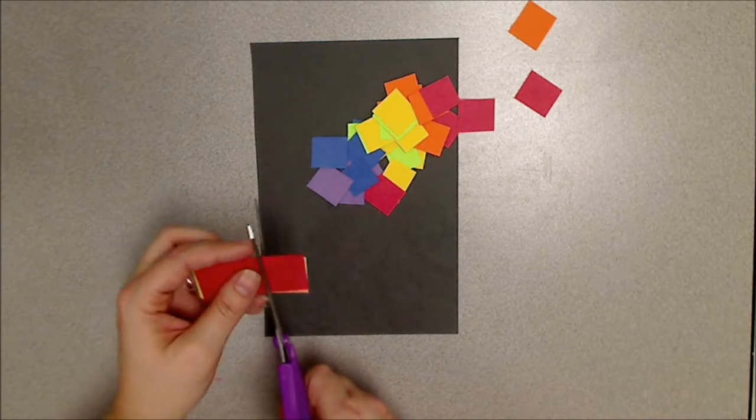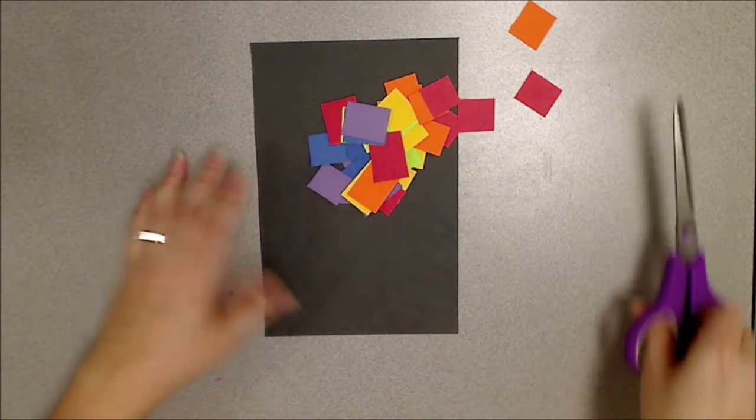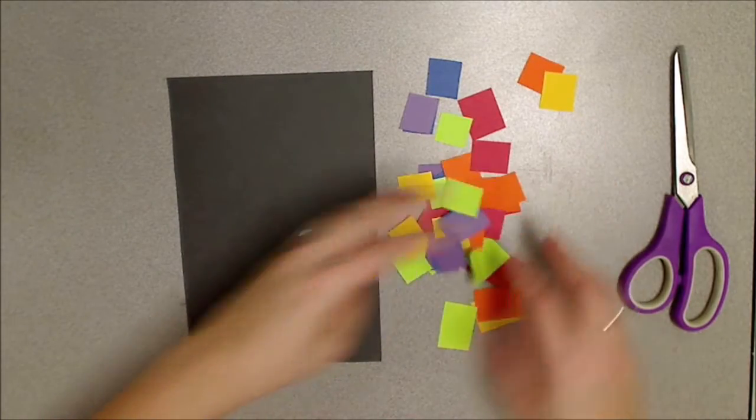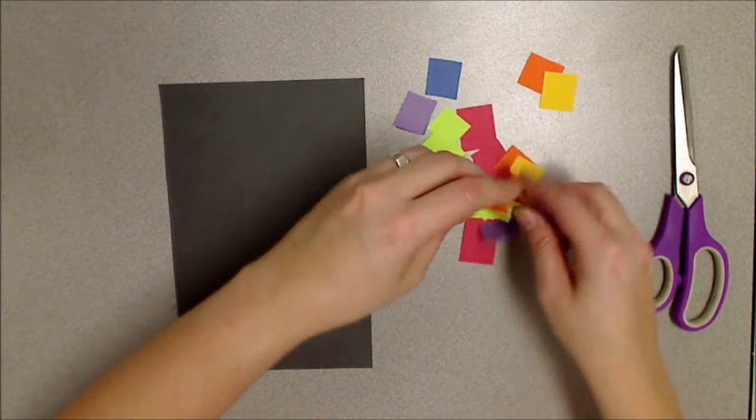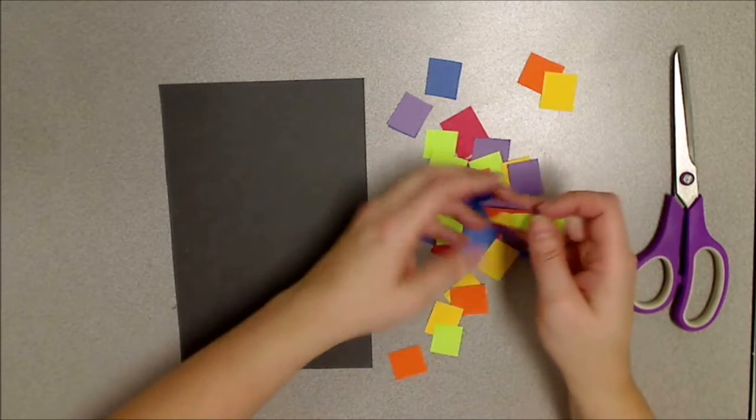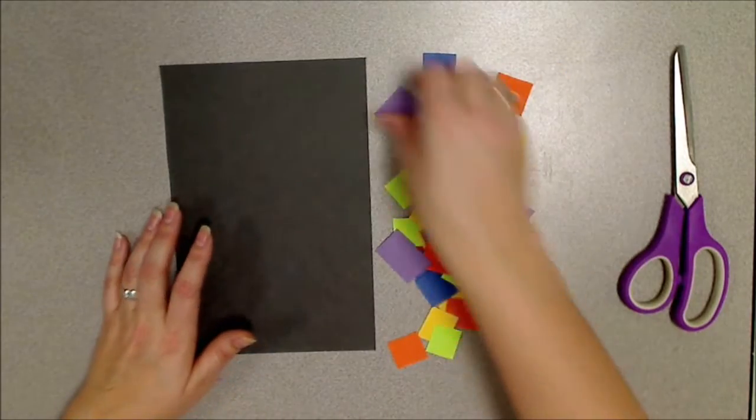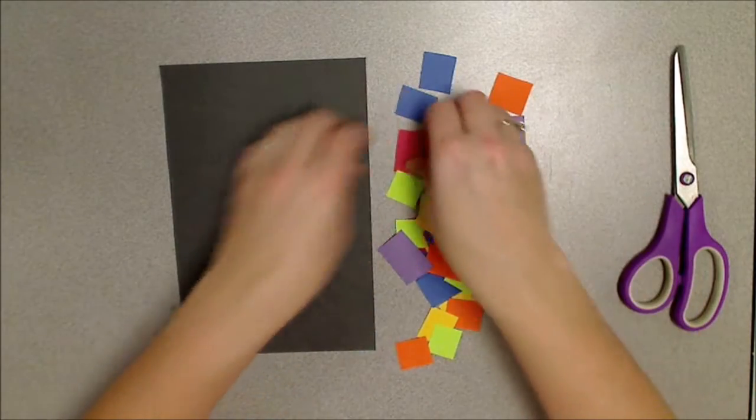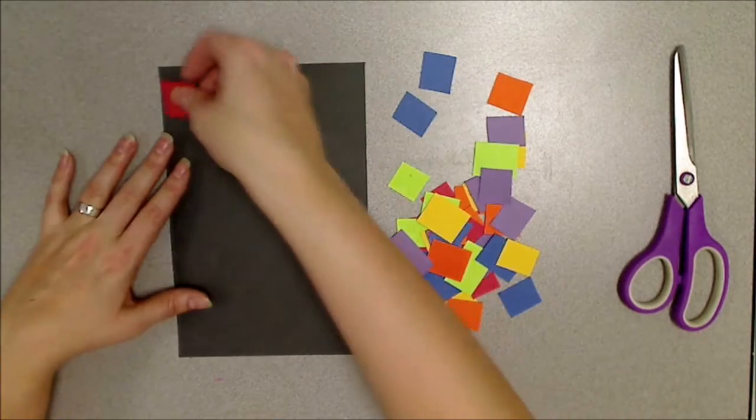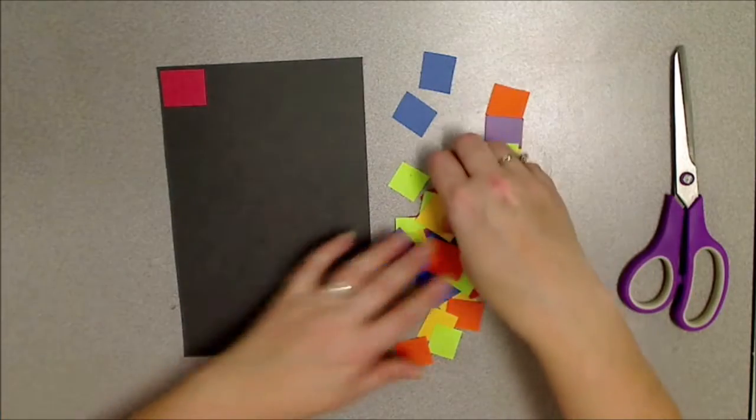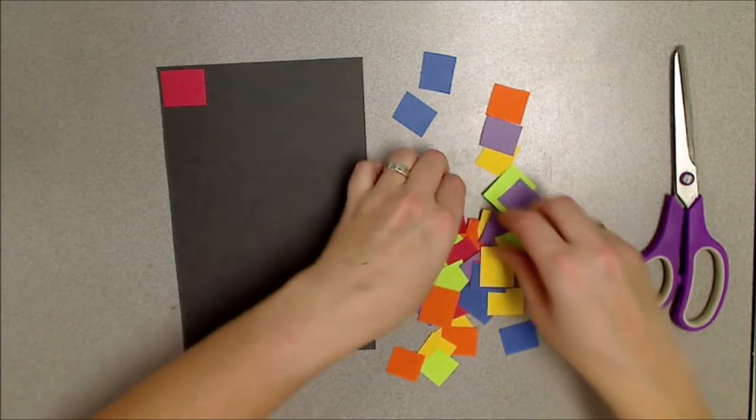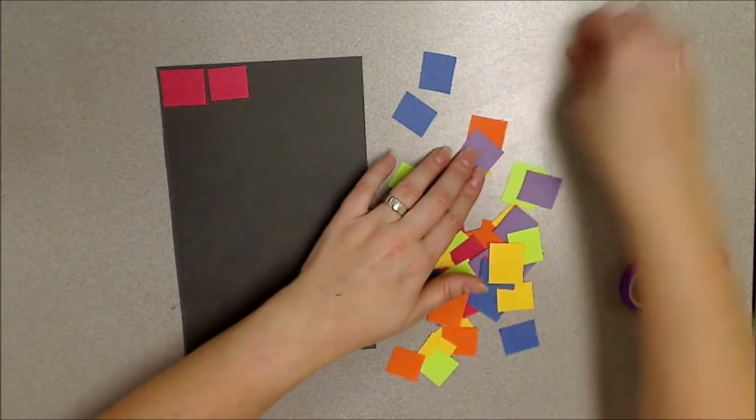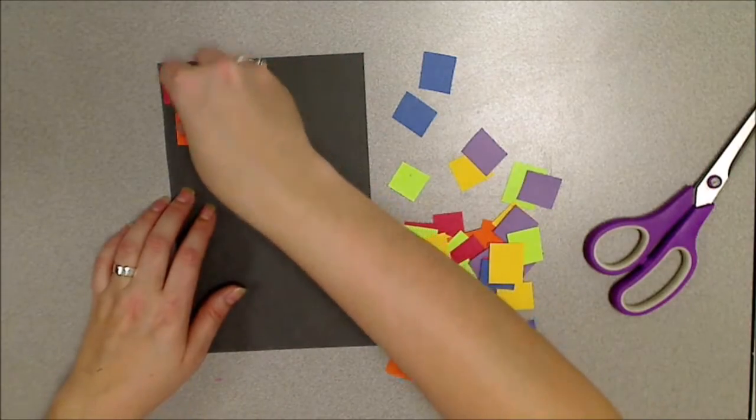Have fun cutting up your paper. Make sure that they're not all the same size, make sure some of them are smaller and some of them are bigger. It makes it more fun. Now I got me a little pile of squares. I can mix them up any way I want to, I can organize them by color if I wanted to. I could do a rainbow where I do red all the way across the top.